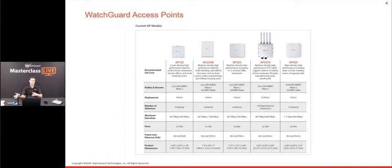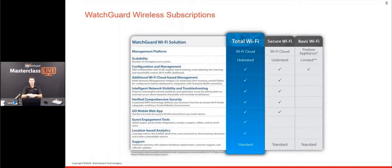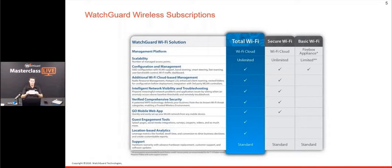All access points support PoE; faster ones require PoE+ in your switching environment. We bundle these similarly to Fireboxes with three subscription tiers. Basic Wi-Fi requires a WatchGuard Firebox UTM appliance as the controller and is limited — it does not support WIPs or trusted wireless environments. It's suitable for very small networks. Our recommendation as a security company is always to move up to the Secure Wi-Fi SKU.